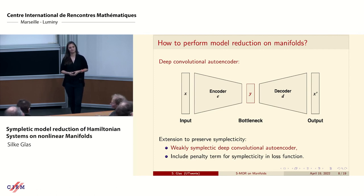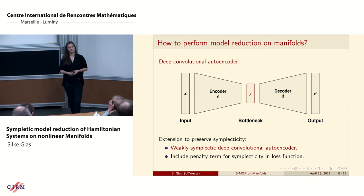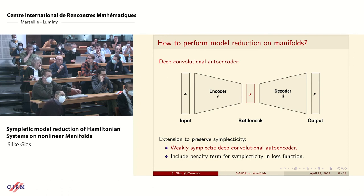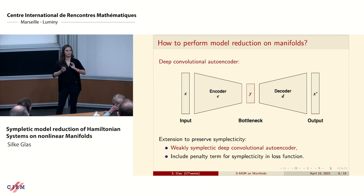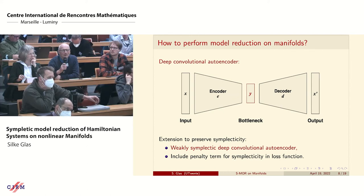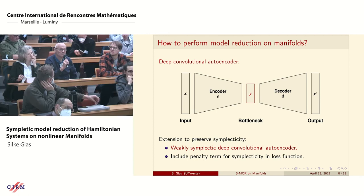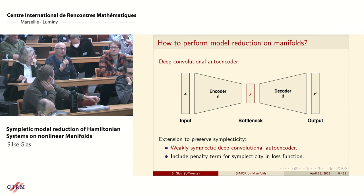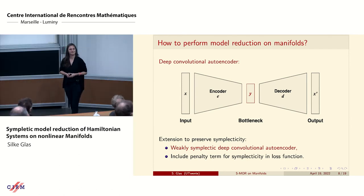Thank you for the talk. Have you considered that in practice Hamiltonian systems often have more structure — for instance they can be separable, which is very common in mechanics — or have symmetries and momentum maps? Is preserving those additional structures something you've thought about? Yes, this is the first work in this direction and we're focused on symplecticity right now, but we're planning to extend it to other conserved quantities and structures. Separable Hamiltonian systems would also be computationally less expensive, so that could be a good starting point for generalization. Thank you.